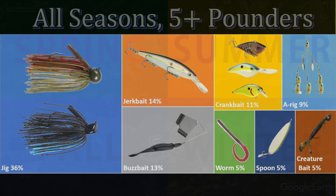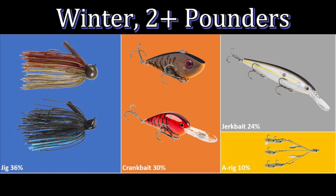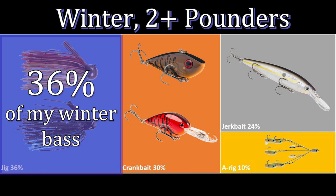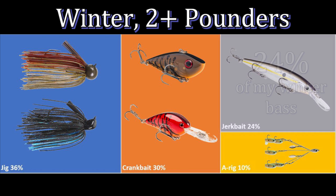Now let's cut the data by season, starting with winter — this is where it gets really interesting. This graph shows all fish caught in winter of any size: 36% came on a jig, 30% on a crankbait, 24% on a jerkbait, and 10% on the Alabama rig. You'll notice there are only four bait categories on this graph.